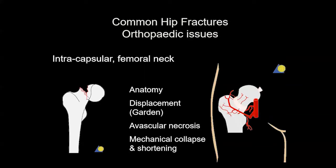Intracapsular femoral neck fractures: the issue here is the anatomy, and because the vascularity is so important, the more displacement that has occurred — classified easily by the Garden classification — the more displacement of femoral neck vascularity, and therefore the higher risk of avascular necrosis. That's particularly important in young patients, because they usually have fairly good femoral neck bone. Most femoral neck fractures are in elderly and frail patients, and the issue there is much less of avascular necrosis, because they don't tend to live that long. The big issue is the mechanical quality of the bone, which leads to femoral neck shortening and collapse if you try and fix it and preserve the head. So for elderly patients, I'm much more worried about mechanical shortening and collapse than I am about AVN.